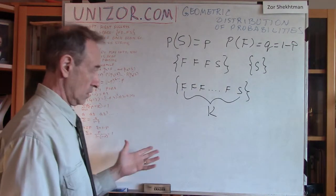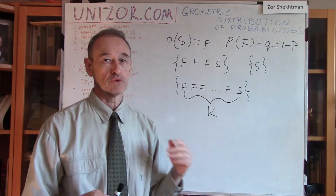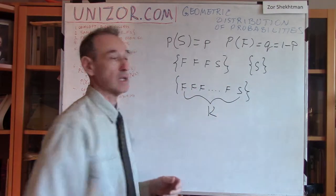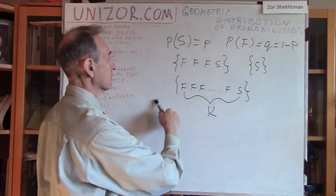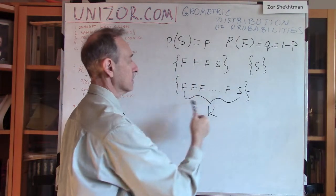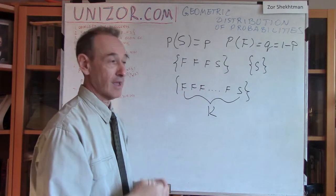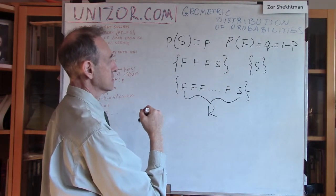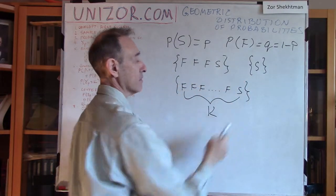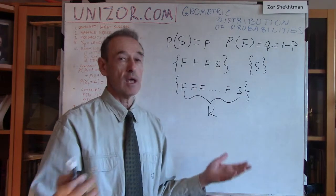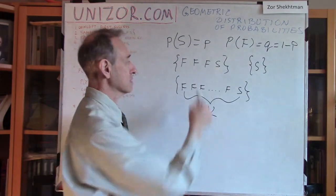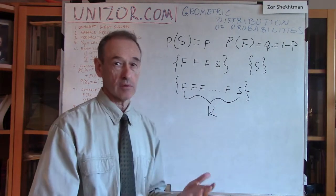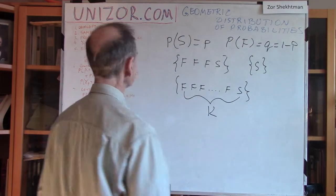The question is: what is the geometric distribution? Geometric distribution of probabilities is basically a distribution of probabilities among these elementary events. More customarily, you connect each elementary event with a random variable equal to the length of the string. So the random variable equals 4 for F-F-F-S, 1 for S, and K for a string of length K. The distribution of probabilities among the different values of this random variable — or equivalently among these elementary events — is called geometric.